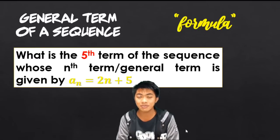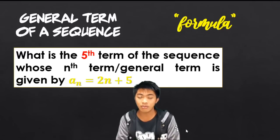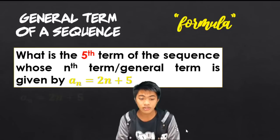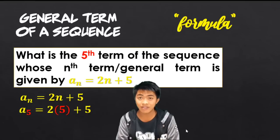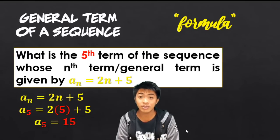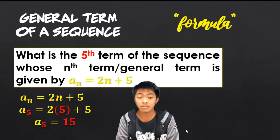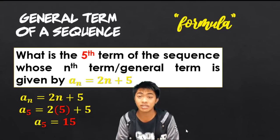How do we answer this problem? Given the general term, we are going to substitute 5 in place of n. So this is the general term — we just substitute 5 in place of n and solve for the result. Whatever the result is, that will be our fifth term. So the fifth term in this problem is 15. That is the general term of a sequence — we are simply substituting.